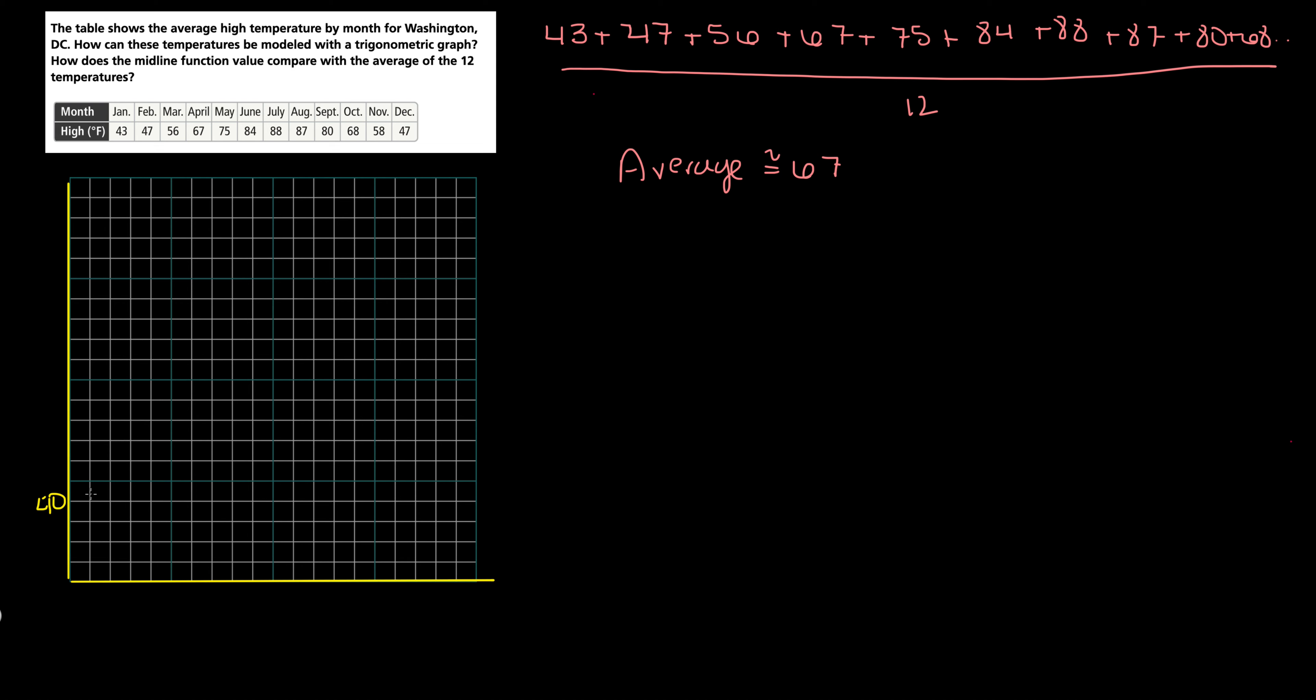So we're looking at 43, 47. This is month one, so that's January. Month two, February, 56 for March, 67 for April, 75 for May, 84 for June, 88, then 87, then 80, then 68. So 40, 50, 68, 58, and then 47.